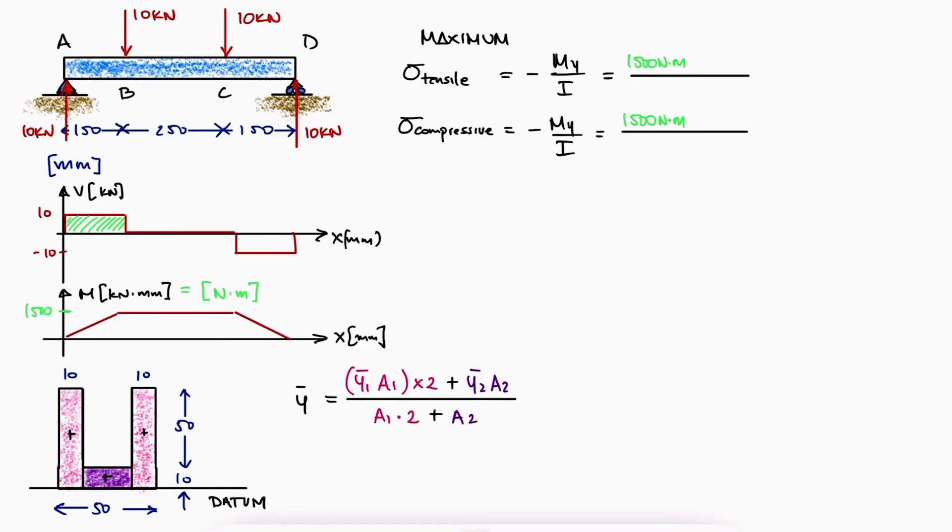The distance from the datum to the centroids of the pink rectangles is 30 mm and the distance to the centroid of the purple rectangle is 5 mm. With this and the area values, we find the neutral axis 25 mm from the bottom.